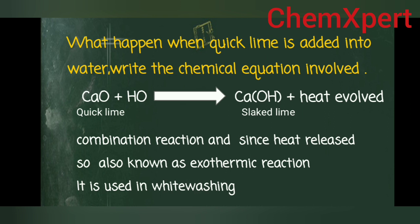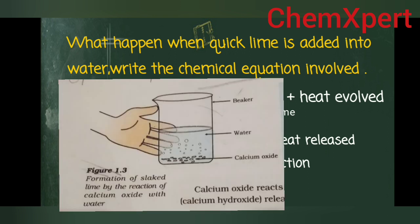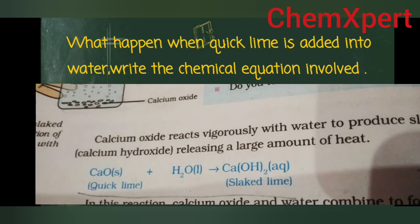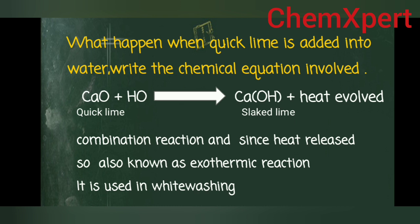NCERT Activity: What happens when quick lime is added into water? Write the chemical equation. In the diagram, calcium oxide is added to a beaker of water: CaO + H₂O → Ca(OH)₂ + heat evolved. This type of reaction is a combination reaction, and since heat is released, it is also known as an exothermic reaction.